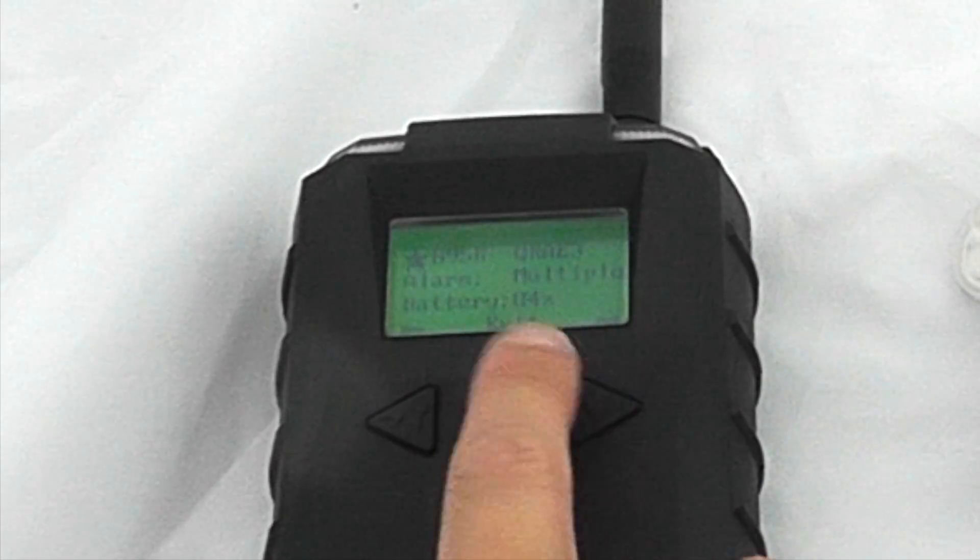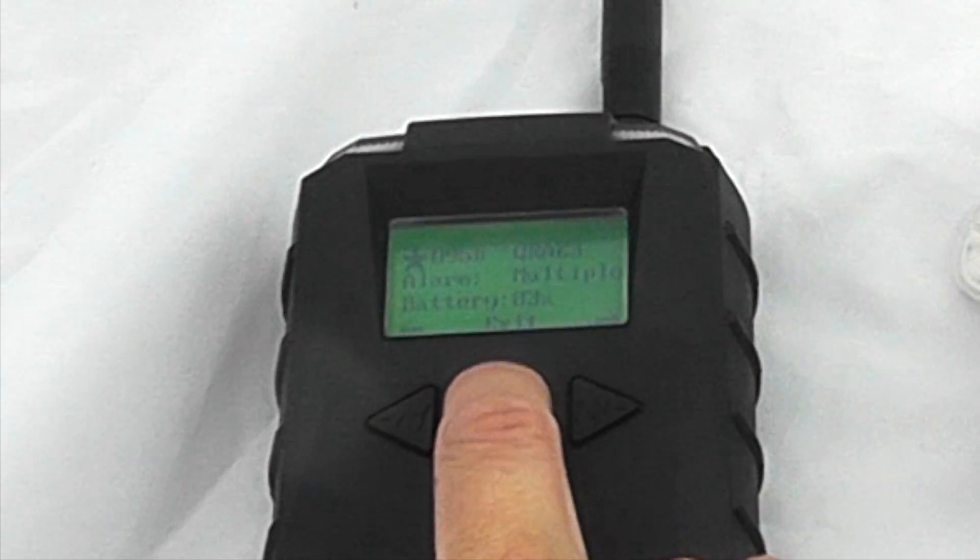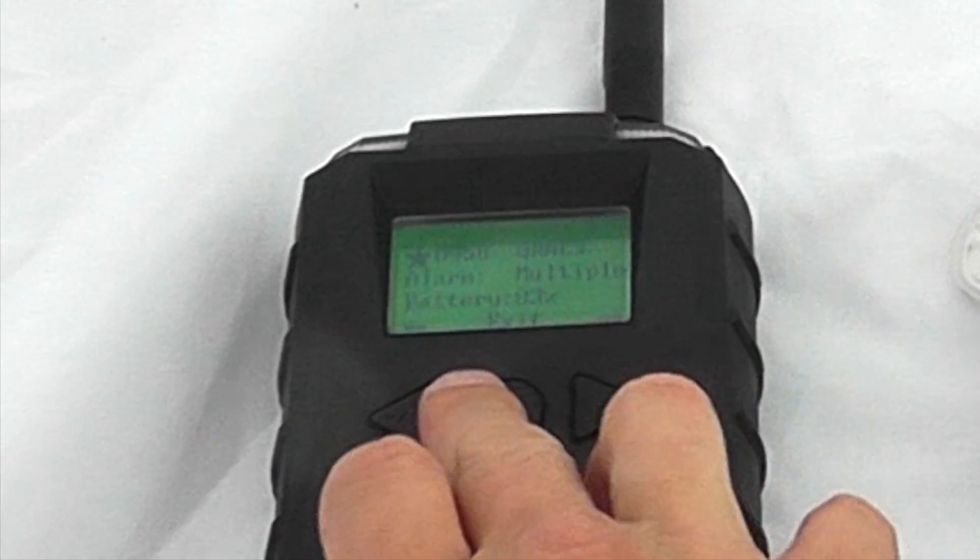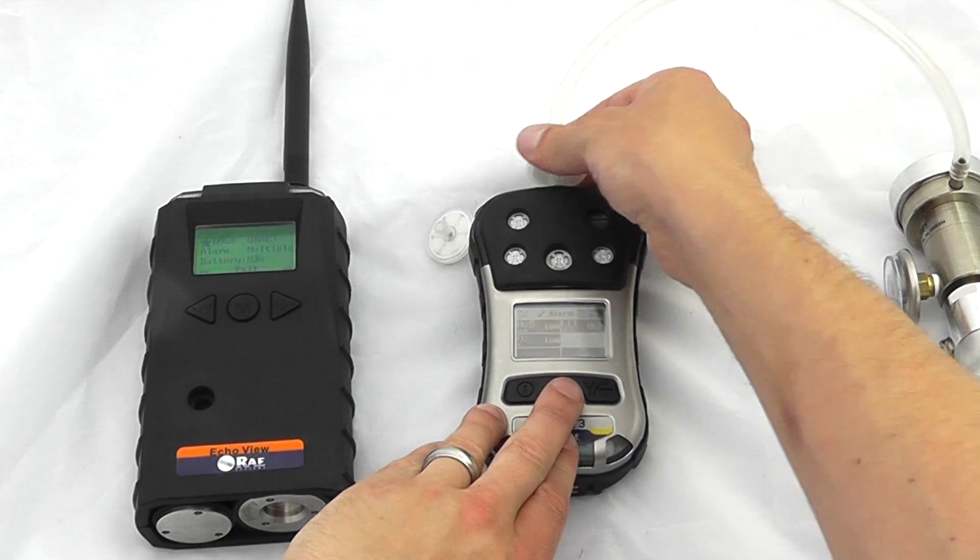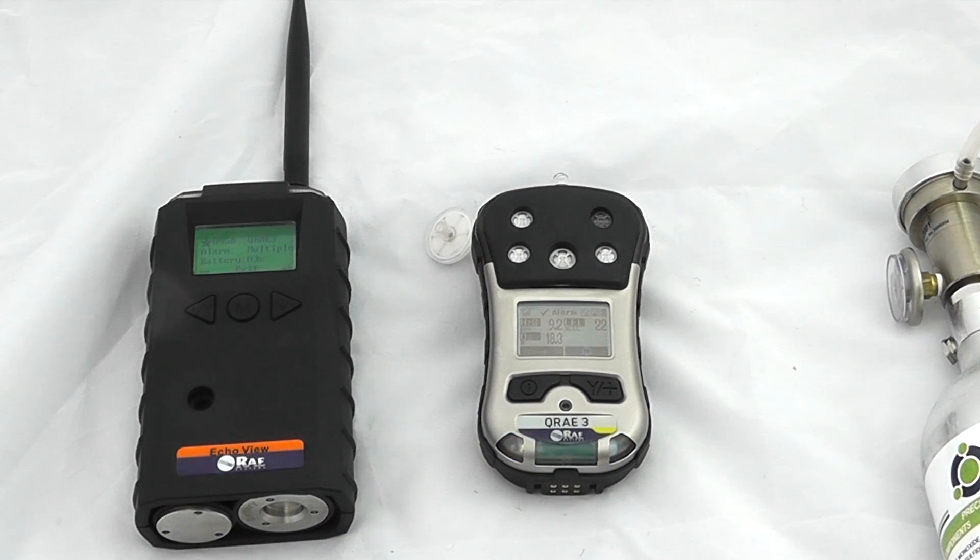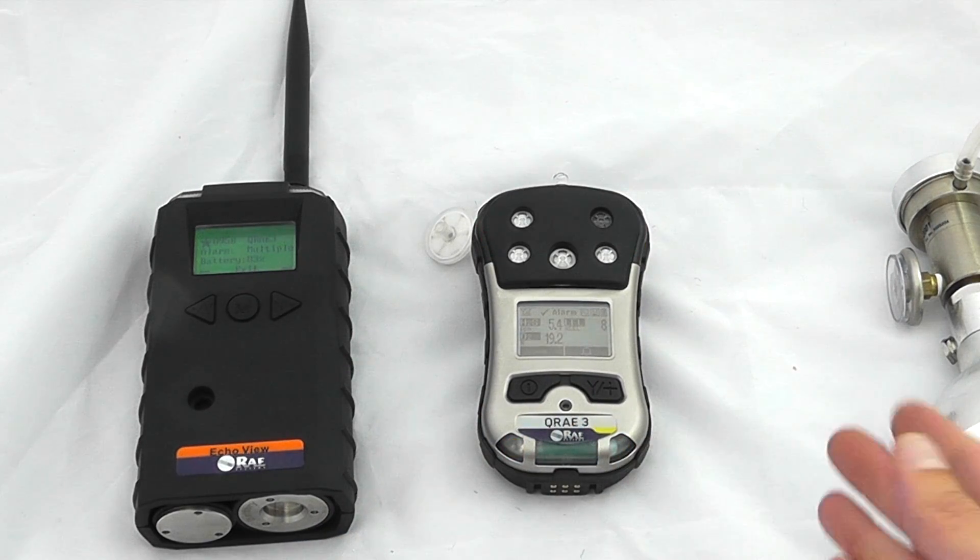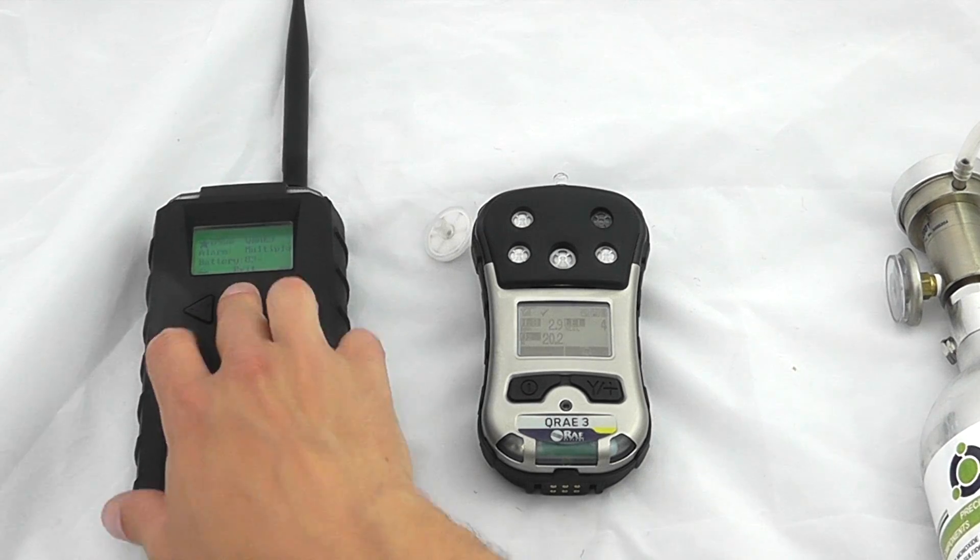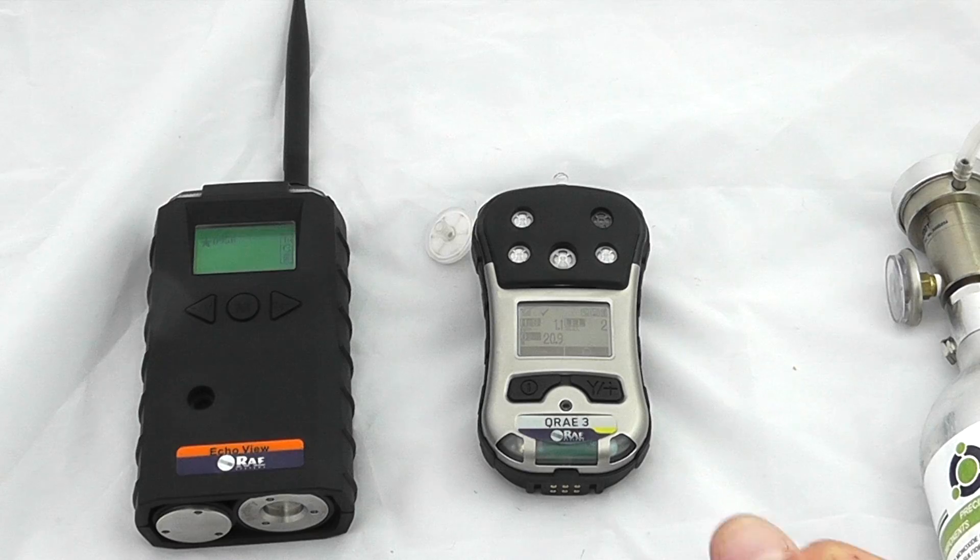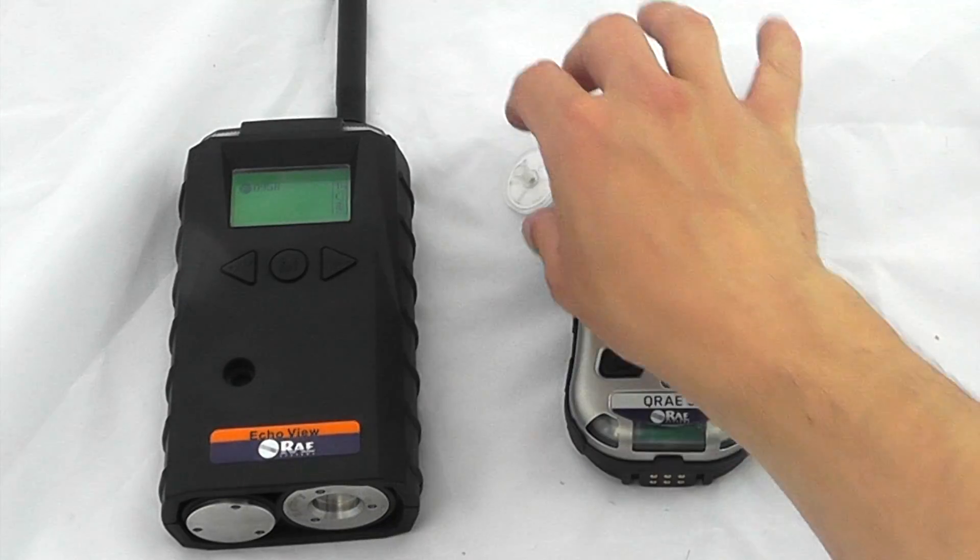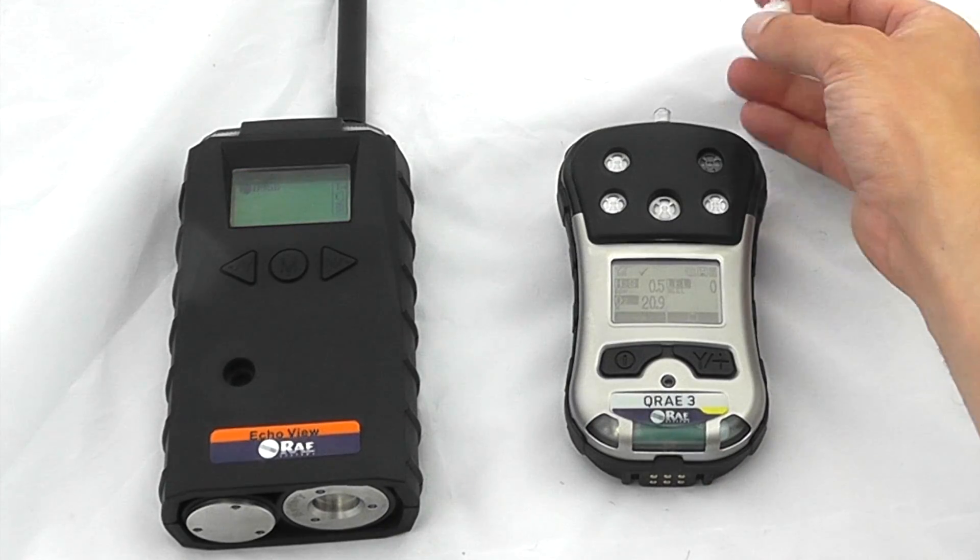We can see the settings, which gases are in alarm at a particular time, and where the instrument is located. This shows multiple gas alarms. If we remove the gas source, assuming a safe state, it takes a second or two, and the Echo View returns to normal operation.